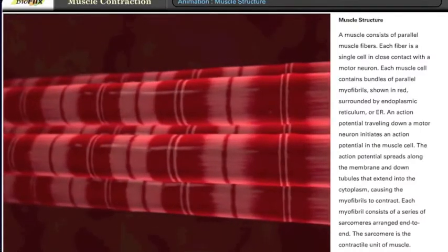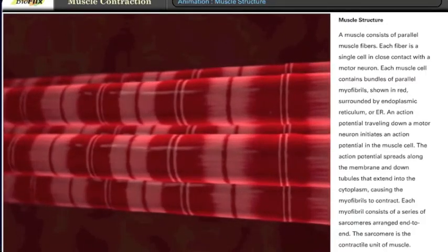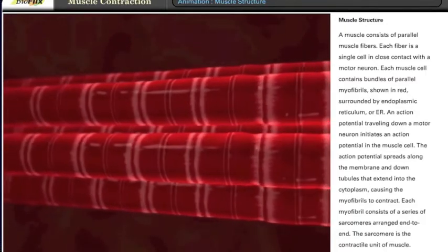Each myofibril consists of a series of sarcomeres arranged end to end. The sarcomere is the contractile unit of muscle.